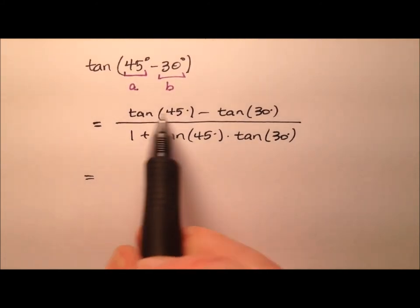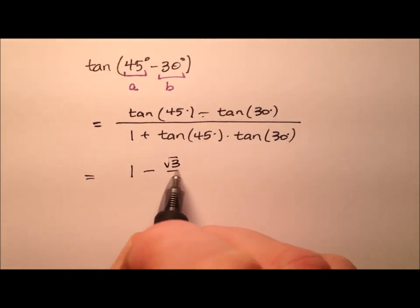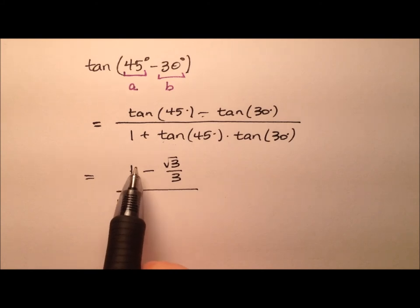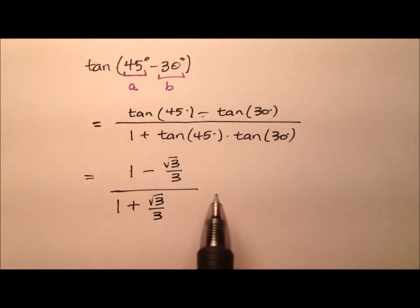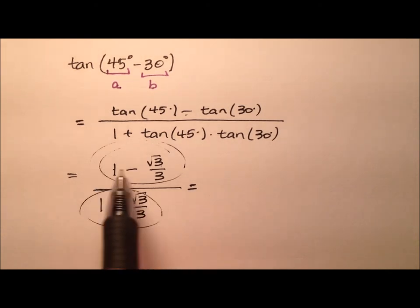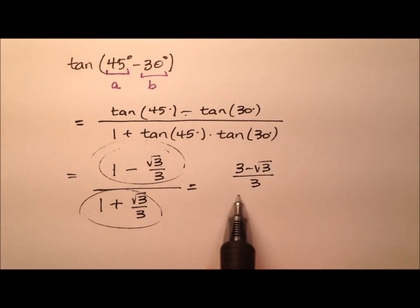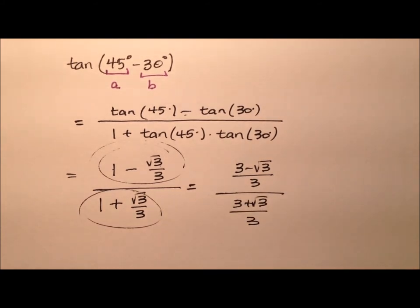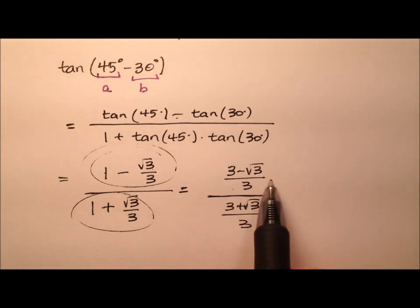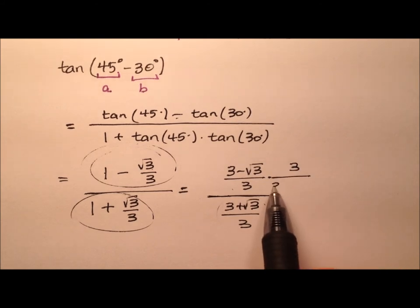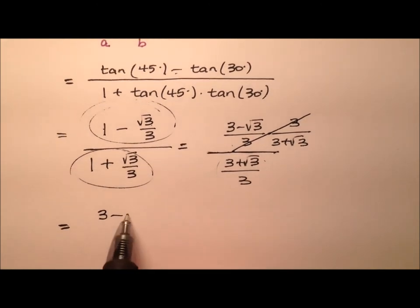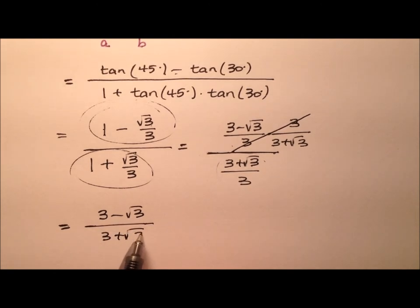So the tangent of 45 degrees is 1, minus the tangent of 30 degrees which is the square root of 3 over 3, all over 1 plus the product of those two: 1 times square root of 3 over 3, which is just square root of 3 over 3. Complex fraction time — getting common denominators gives 3 minus the square root of 3 over 3, and 3 plus the square root of 3 over 3. Dividing by multiplying by the reciprocal: 3 over 3 plus the square root of 3 — those denominators cancel — leaving 3 minus the square root of 3 divided by 3 plus the square root of 3.